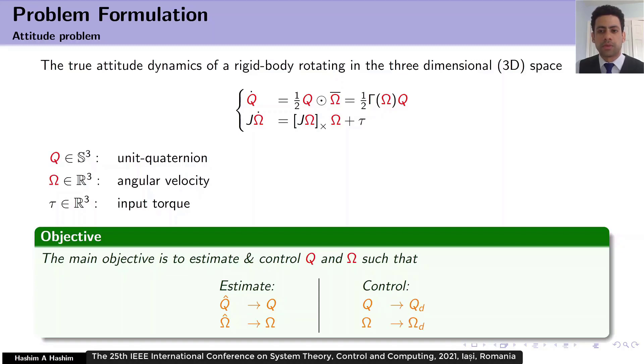Where q hat is unit quaternion estimate, omega hat is angular velocity estimate, q_d is the desired unit quaternion and omega_d is the desired angular velocity.